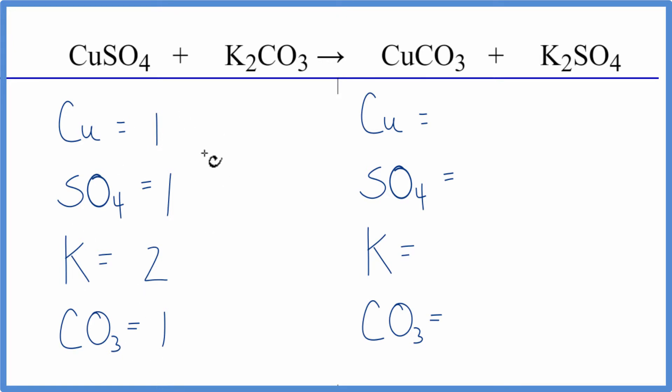So this makes it really quick to count everything up. Let's go on the product side. One copper, one sulfate, two potassium atoms, and then just the one carbonate.